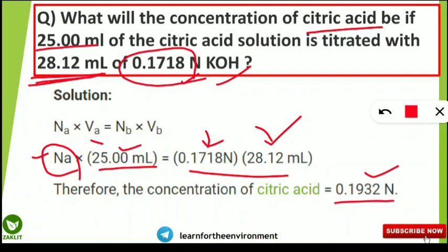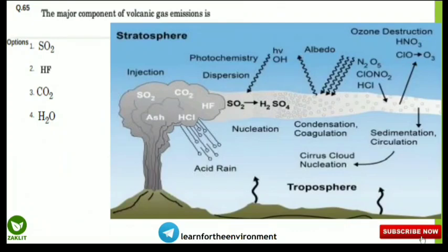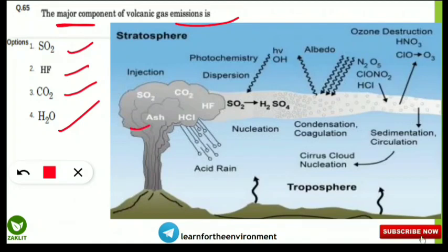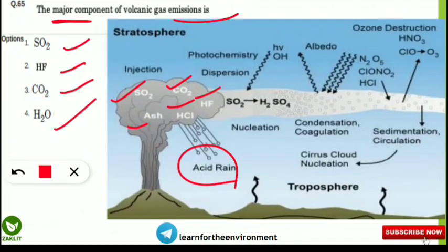The next question asks: what is the major component of volcanic gas emission? The options are sulfur dioxide, HF, carbon dioxide, and water vapor. From the image shown, volcanic gas emissions include water vapor, sulfur dioxide, carbon dioxide, HF, and hydrochloric acid. These components contribute to acid rain as indirect components, and they also react with other gases in the atmosphere to destroy stratospheric ozone.